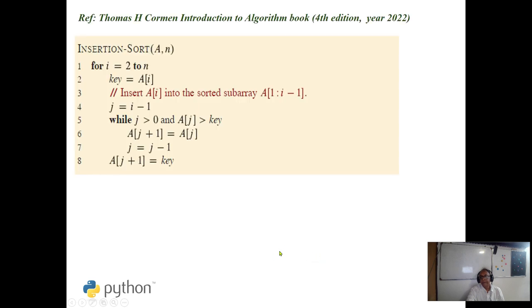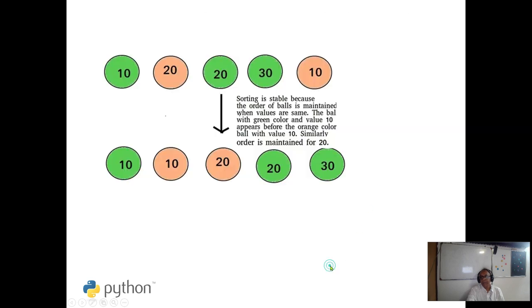This is the algorithm of insertion sort — a very simple algorithm that can be found from Corman's book. Insertion sort, bubble sort, and selection sort all have one good advantage: they are all stable sorts.